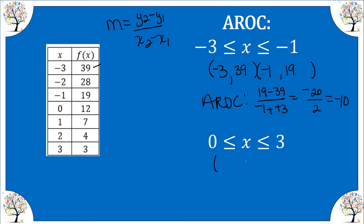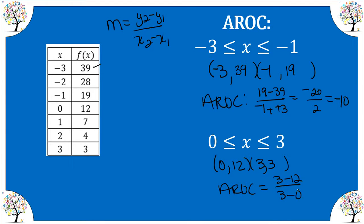Here the two points start with coordinates 0 and 3. When x is 0, y is 12. When x is 3, y is 3. So the average rate of change is the change in y — 3 minus 12 — over the change in x — 3 minus 0 — which gives us negative 9 over 3, with a final answer of negative 3.